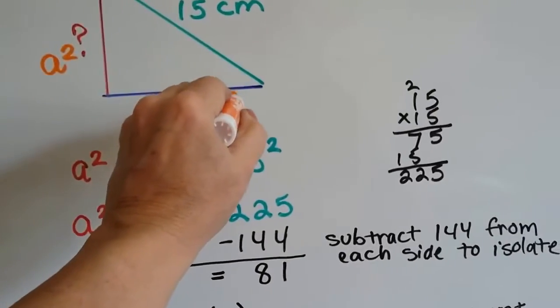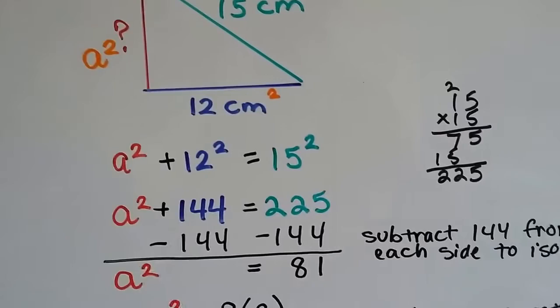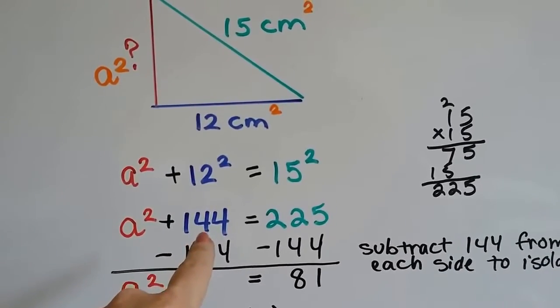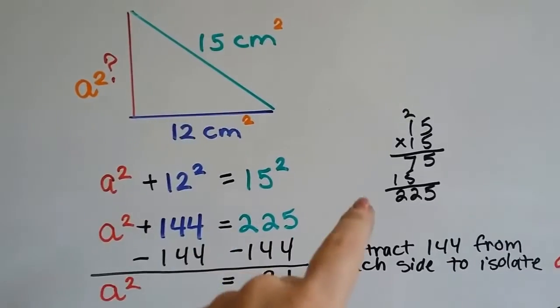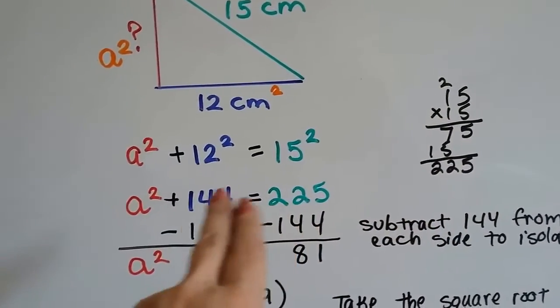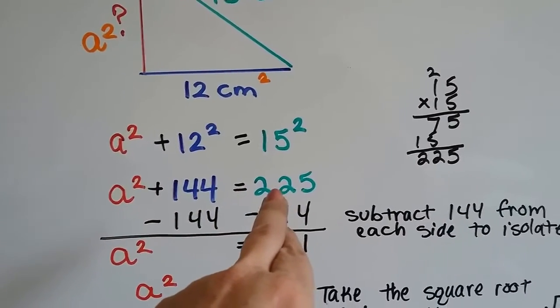We're going to have to square this one and square this one. These two are going to have to be squared. 12 times 12 is 144, and 15 times 15 is 225. So now I know that a² + 144 = 225.